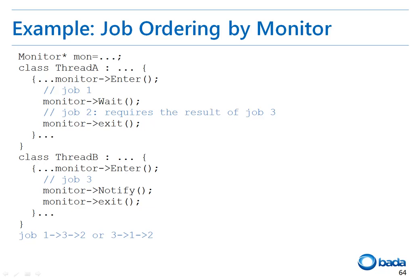Therefore, if this code is performed, the order of the job execution would be 1-3-2 or 3-1-2, so that job 2 is performed after job 3 without failure.